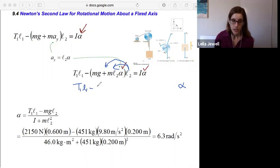So I'd have T1 L1 minus, I'm also going to distribute out that minus sign, so mg times L2, it's really easy to miss that L2, and then minus m L2 squared times alpha is equal to I times alpha.